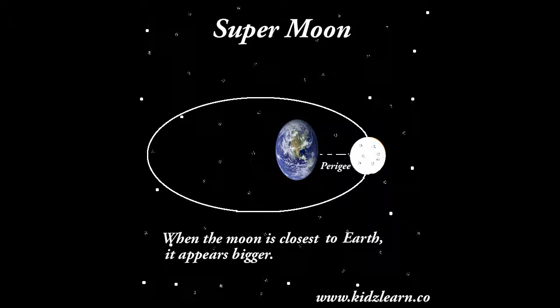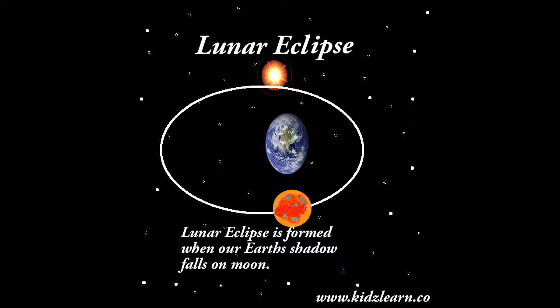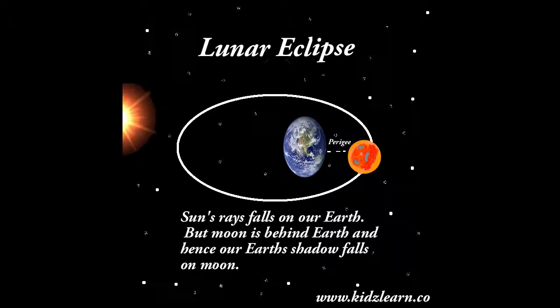When the Moon is closest to Earth, it appears bigger. A lunar eclipse is formed when our Earth's shadow falls on the Moon. The Sun's rays fall on our Earth, but the Moon is behind Earth, and hence our Earth's shadow falls on the Moon.